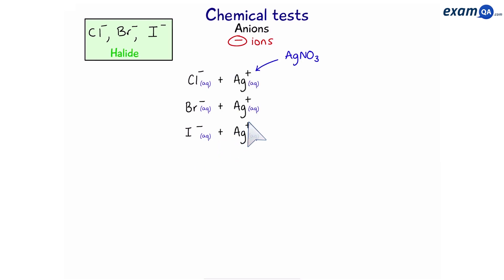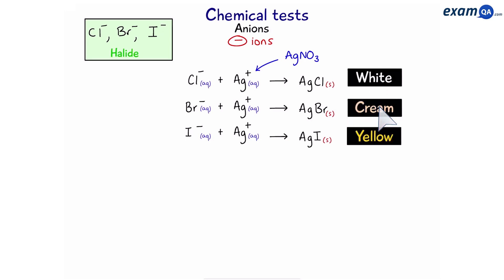They will produce silver chloride, silver bromide or silver iodide. These will form solid precipitates and they will all have a unique color: white, cream or yellow.